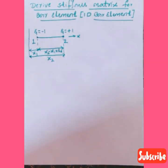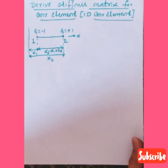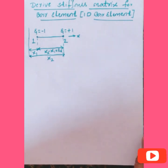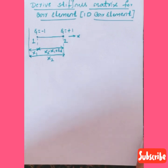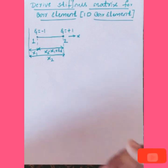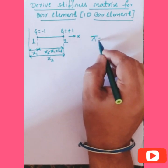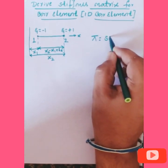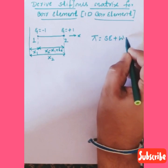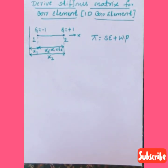To derive the stiffness matrix, the basic requirement is knowing the potential energy functional. We already derived this in the first module — what is potential energy, strain energy, and work potential. Directly, the potential energy functional pi equals strain energy plus work potential.